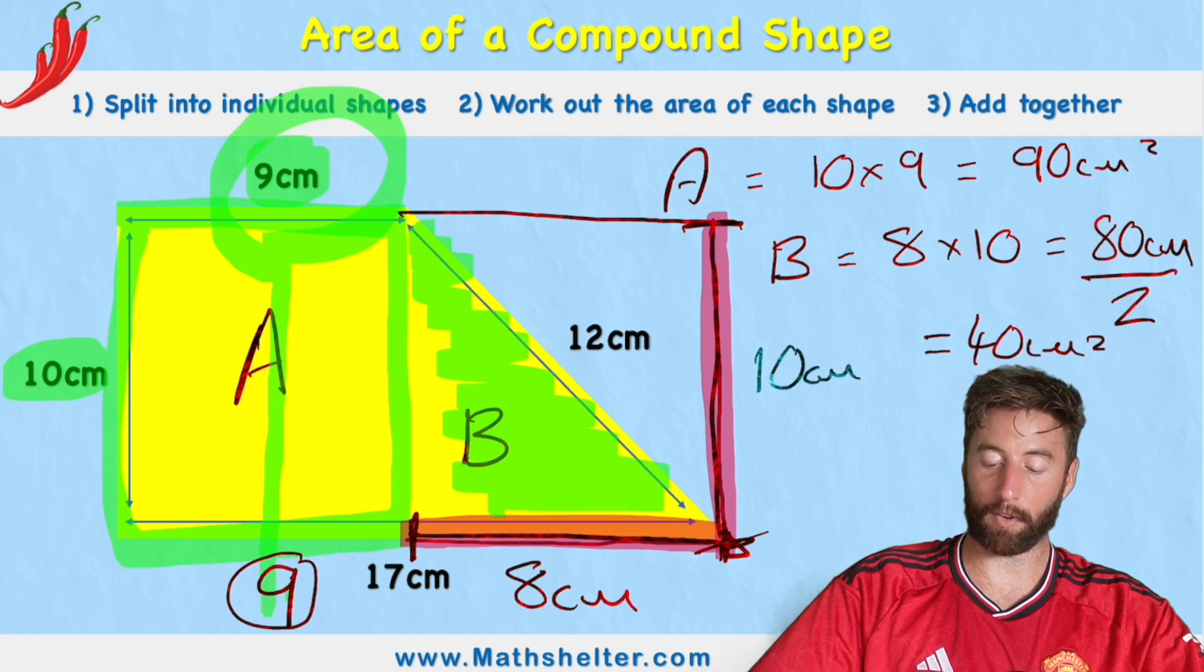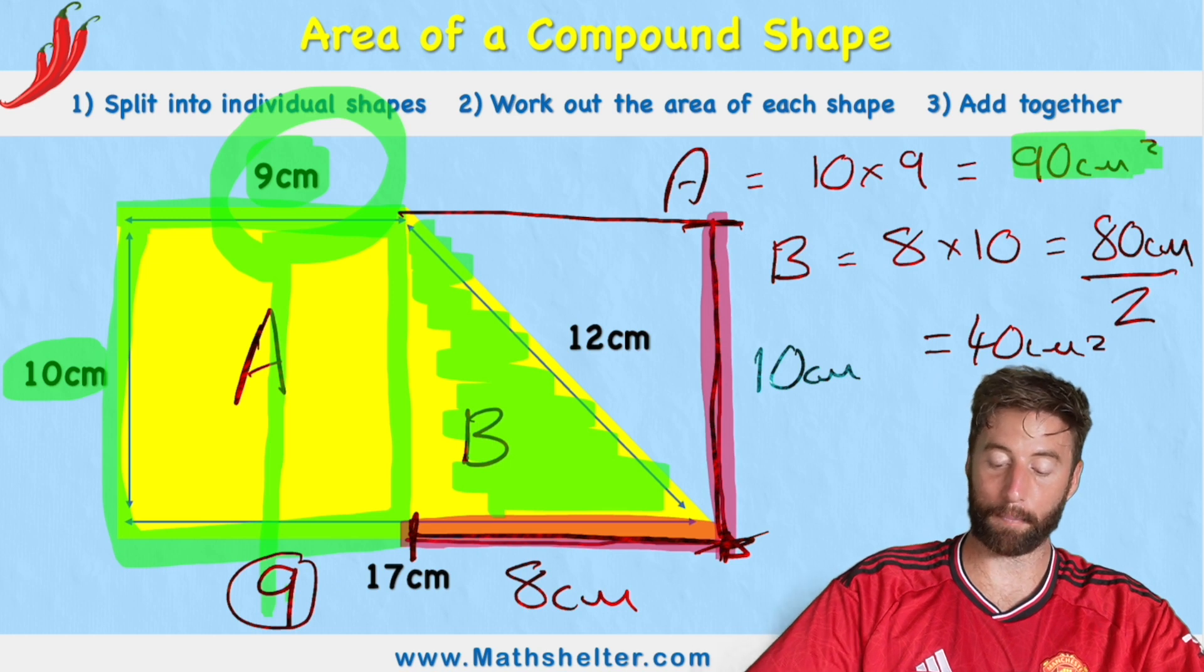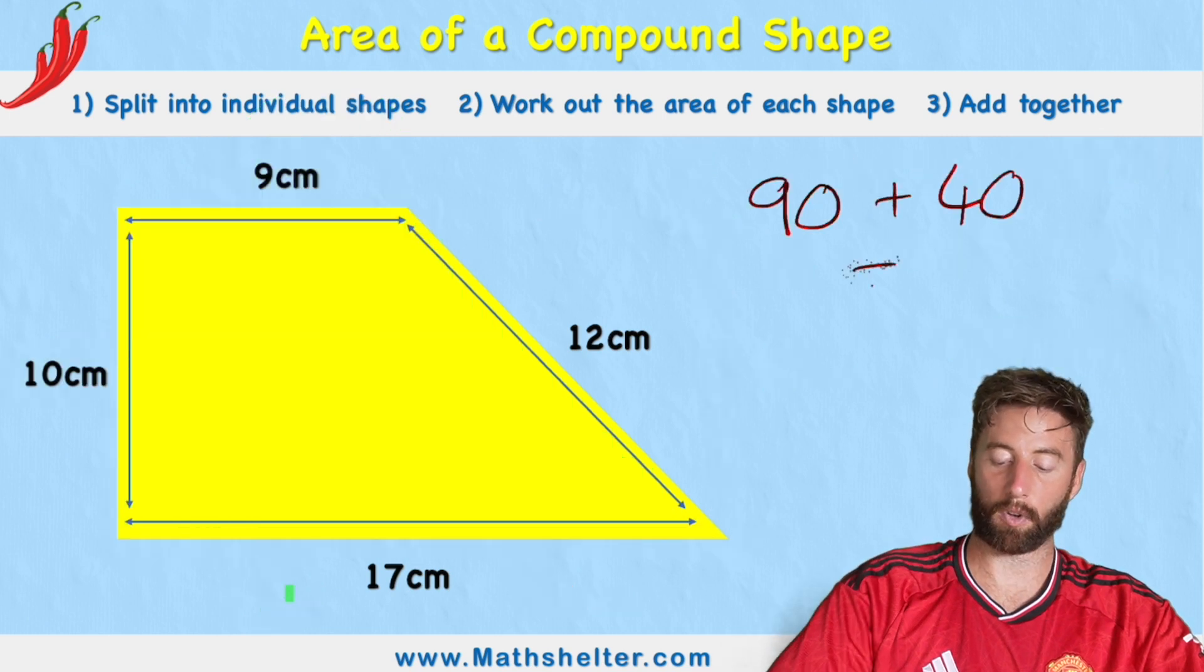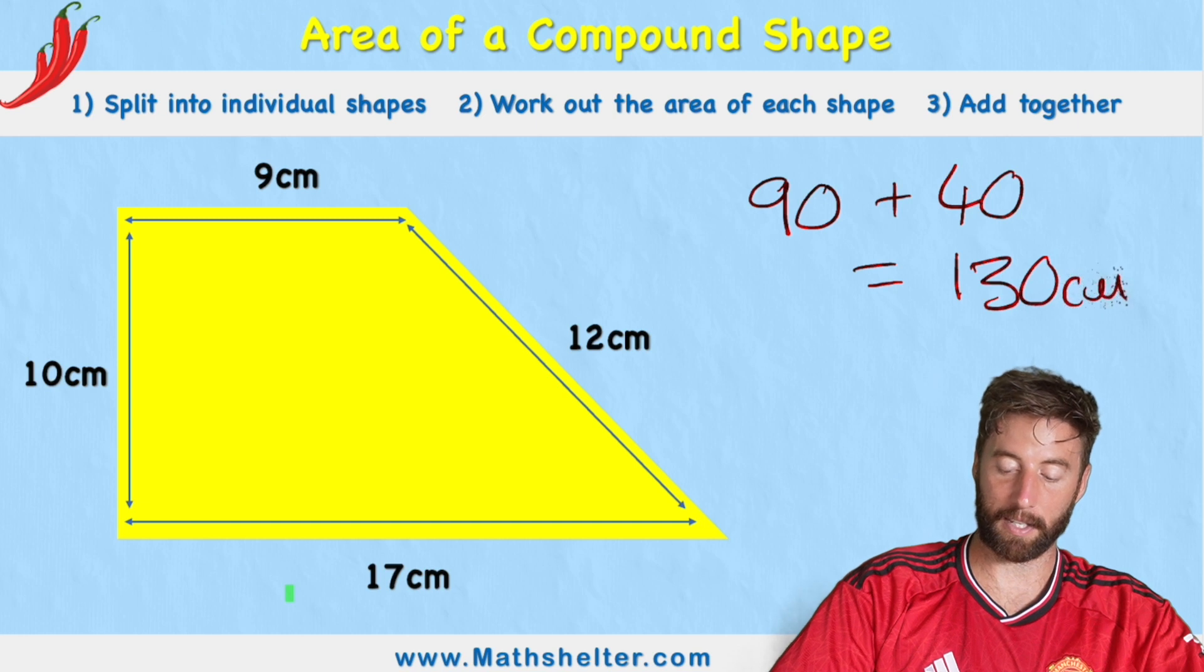So the area of shape A was 90 centimeters squared, and the area of shape B was 40 centimeters squared. So all I'm going to do is add those two together to get a total of 130 centimeters squared.